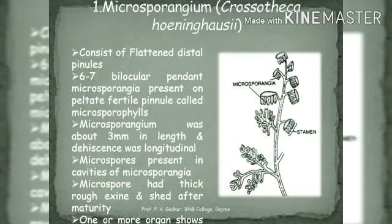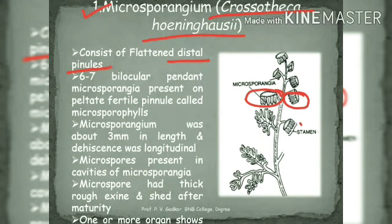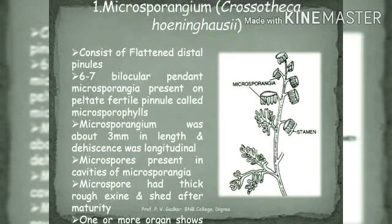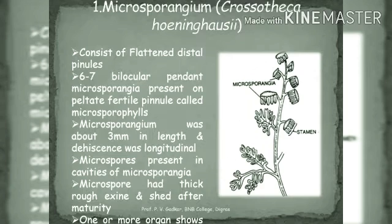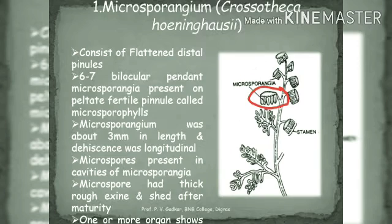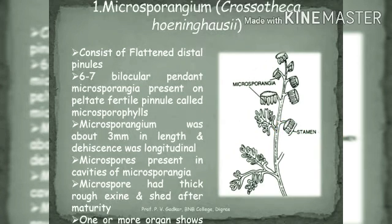The male reproductive structure, the microsporangium, is named Crossotheca hoeninghausi. It consists of flattened distal pinnules, with six to seven bilocular pendant microsporangia. The microsporangium was about three millimeters in length, and dehiscence was longitudinal. Microspores are present in the cavities of the microsporangia and had thick, rough exine after maturity.